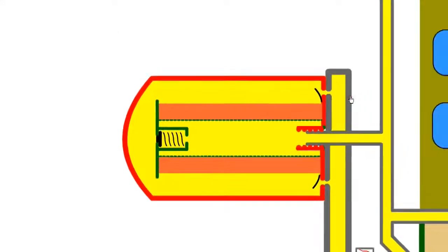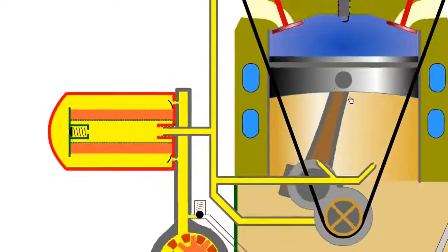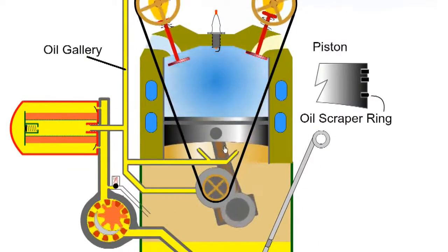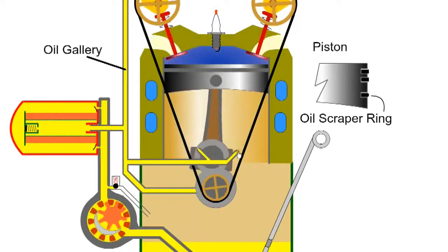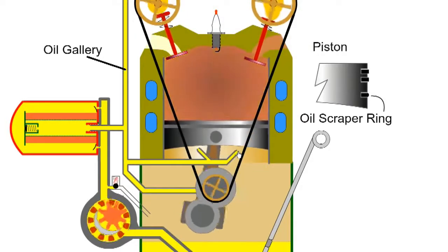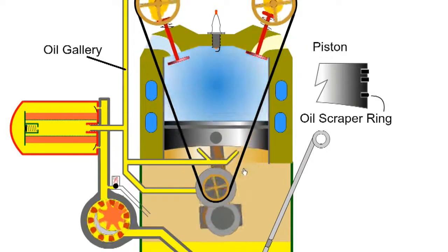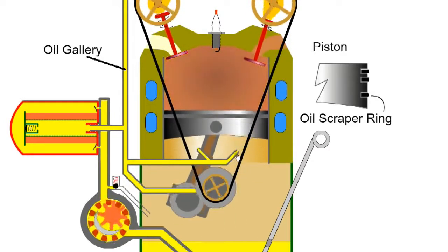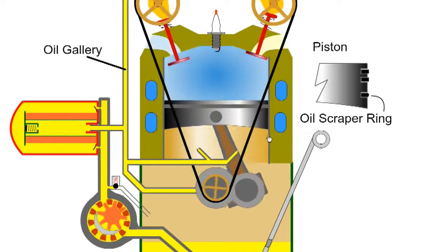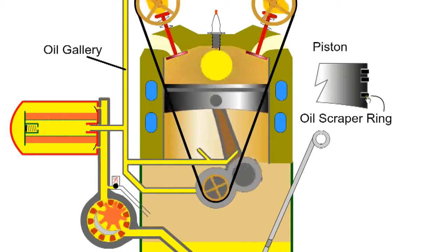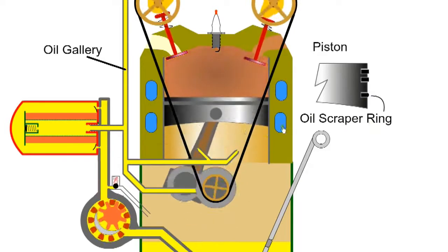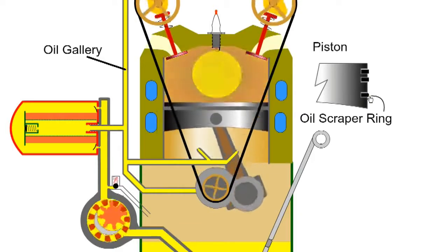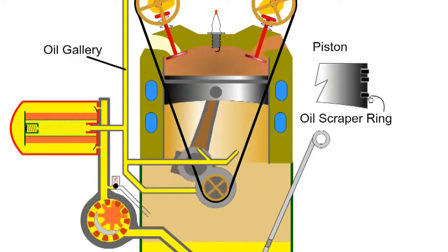The pump forces oil through the oil filter to the galleries and passages which are then distributed to the crankshaft, connecting rod bearings, and cylinder wall. Oil is forced through holes in the crankshaft to lubricate the big end bearing. The cylinder is lubricated via spurt holes or oil jets which coat the wall with a film of oil. Excess oil drains by gravity to the sump.